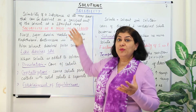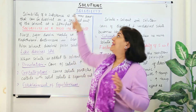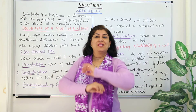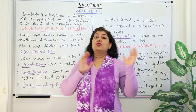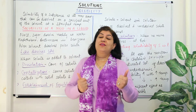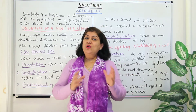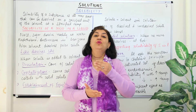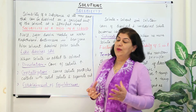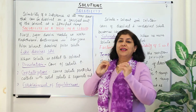The solubility of a substance is the maximum amount — it means you cannot dissolve any more. It's the ability to dissolve up to a capacity. For example, what is the capacity of this classroom? I have 20 seats, so the capacity is 20 students. You cannot add any more. Similarly, when we say maximum amount, beyond this you cannot add any more solute to that solvent.